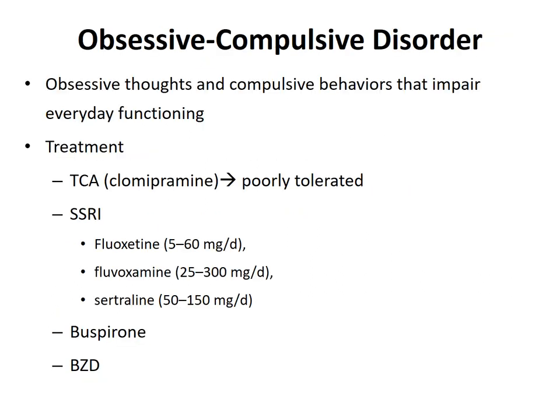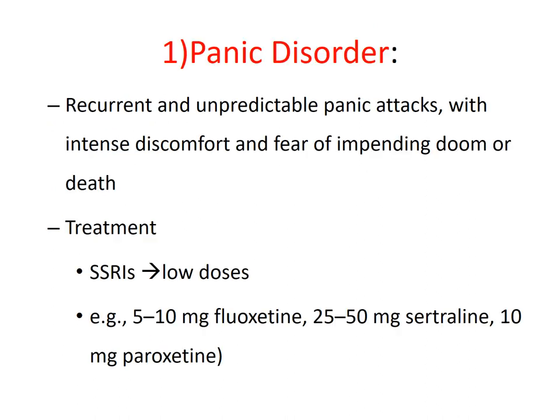The second condition is obsessive compulsive disorder, in which the patient suffers obsessive thoughts as well as compulsive behaviors which may lead to impairment of everyday functioning. Initially, doctors tried treating OCD with tricyclic antidepressants, but patient compliance was very low and patients experienced several side effects. So it was later replaced by selective serotonin reuptake inhibitors, buspirones, or benzodiazepines. Then there are panic disorders — recurrent and unpredictable panic attacks with intense discomfort and fear of impending doom or death. The treatment is usually started with low doses of selective serotonin reuptake inhibitors, and the dose can be gradually titrated up.